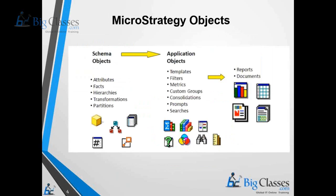MicroStrategy objects include schema objects and application objects. Schema objects are created by the MicroStrategy Architect. There are various kinds of schema objects — like attributes and facts — which are directly mapped to your tables and columns in the data warehouse. To design your model within the MicroStrategy environment, you have to create your schema objects. So apart from configuring the metadata, you also have to define your schema objects, which are directly mapped to your database tables and columns.